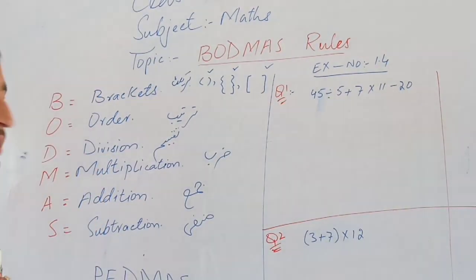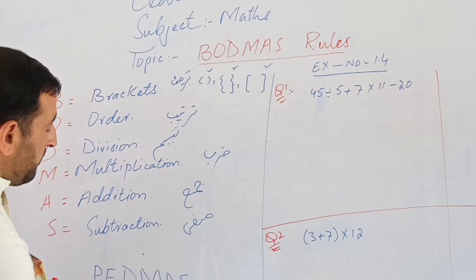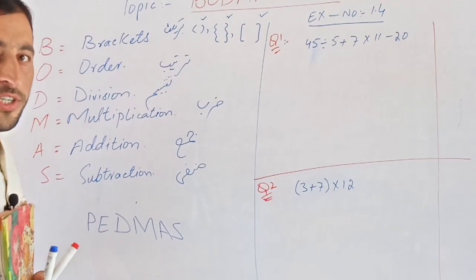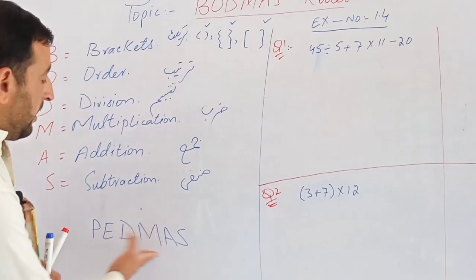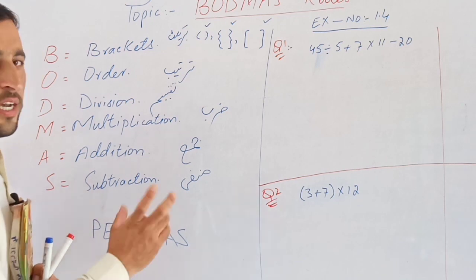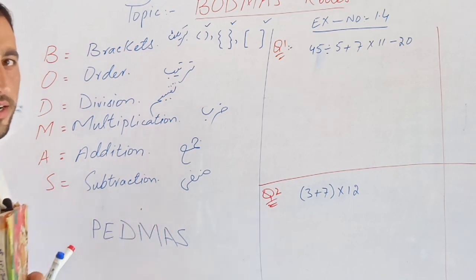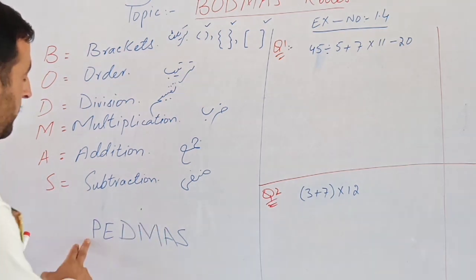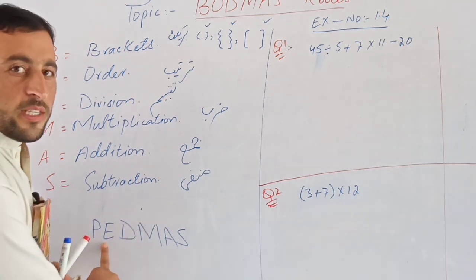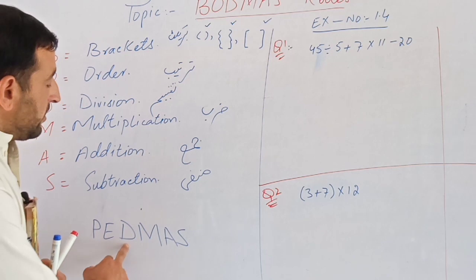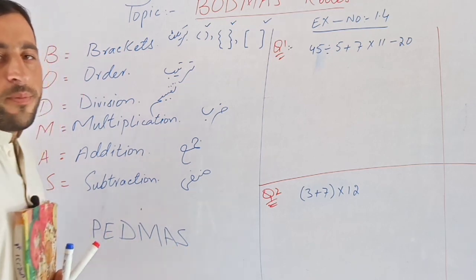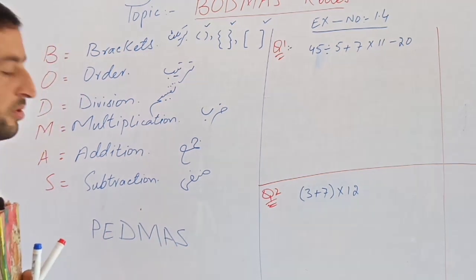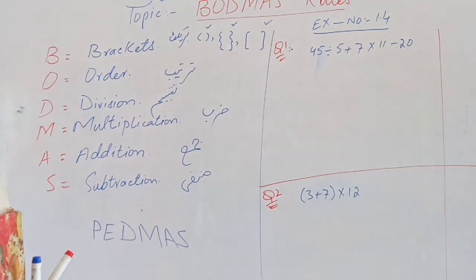These are the BODMAS rules. Now we will apply the PEMDAS rules. That means: Parenthesis, Exponent, Division, Multiplication, Addition, Subtraction. This is for a higher level class.